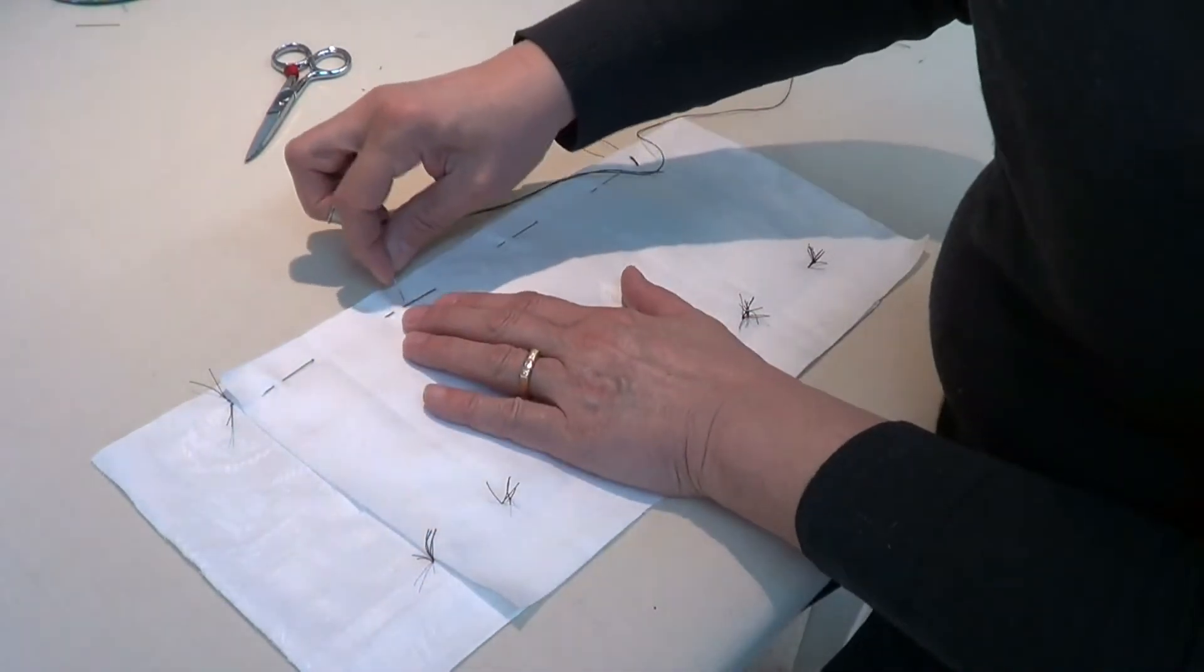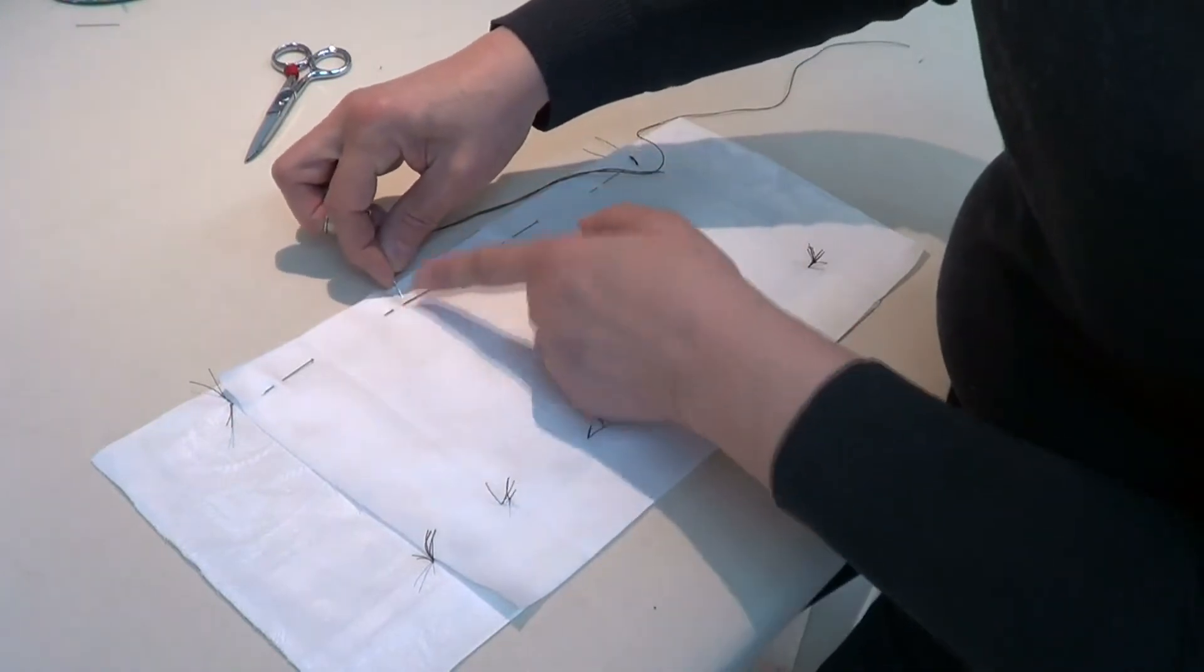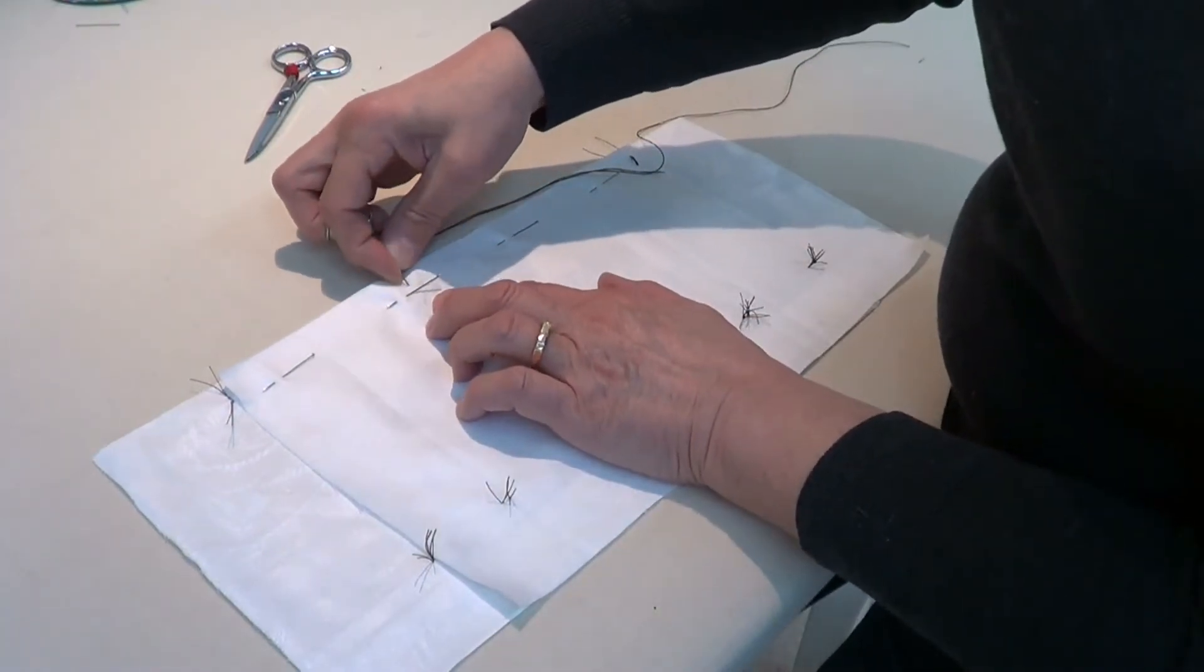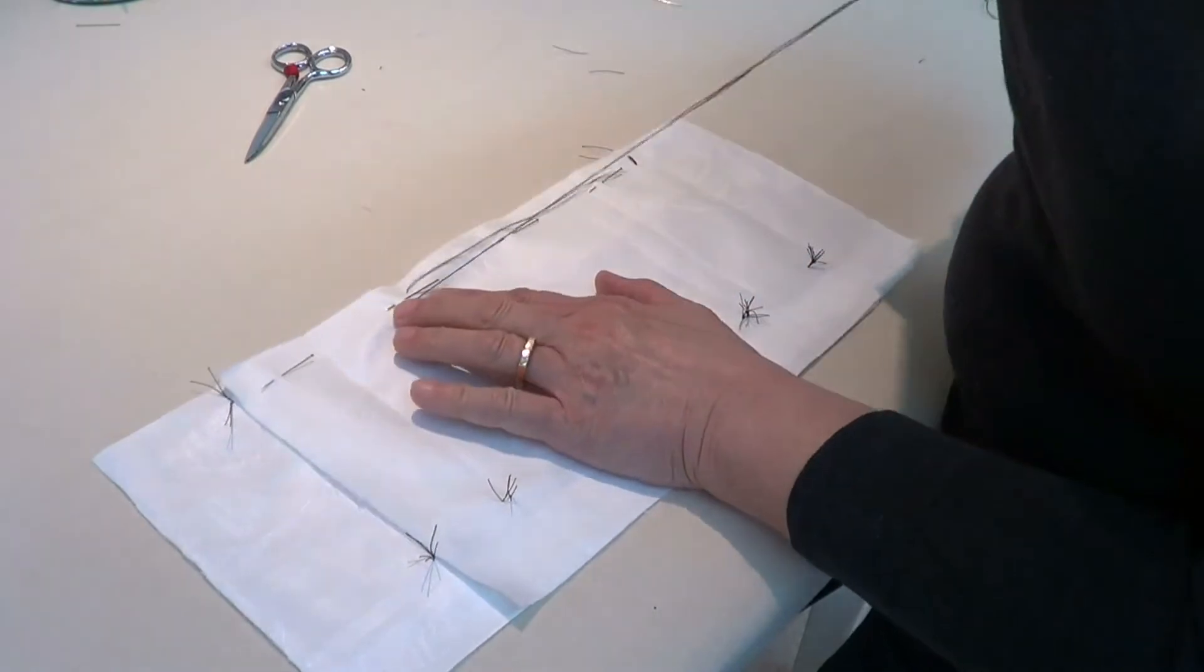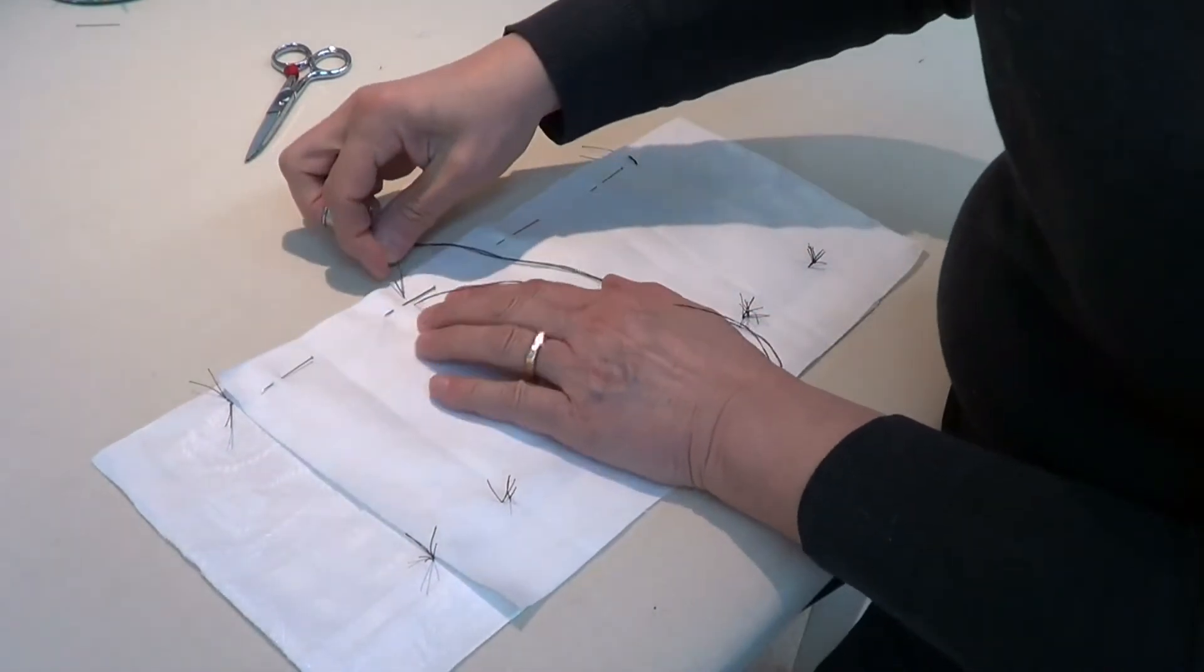But in essence, I'm just going to do the same thing. I go in perpendicular to the cut edge and just do one backstitch.